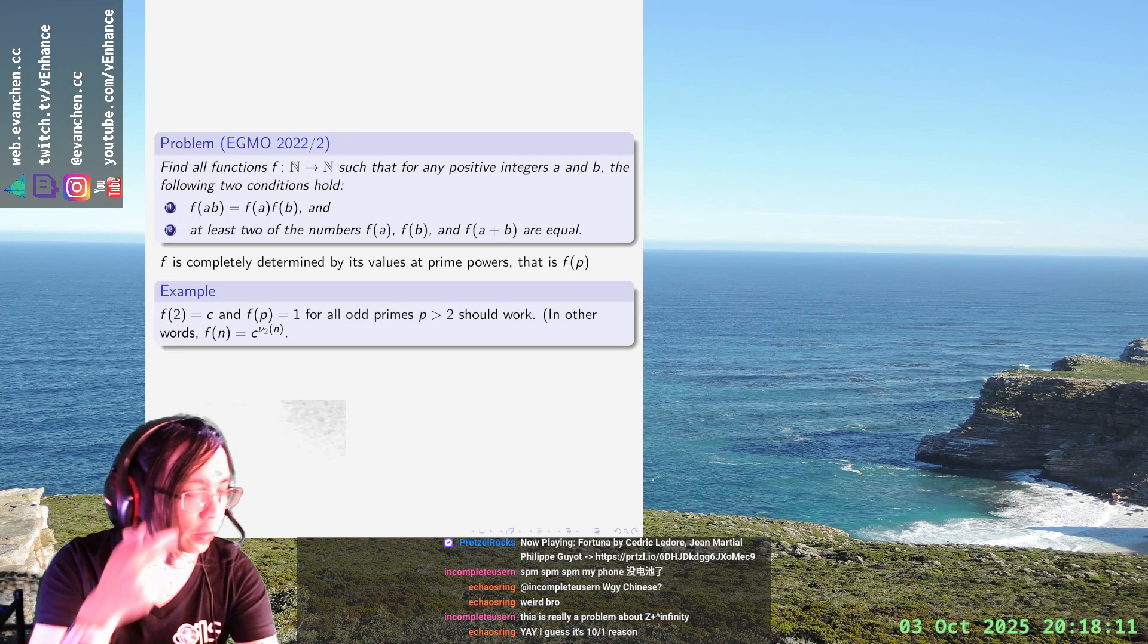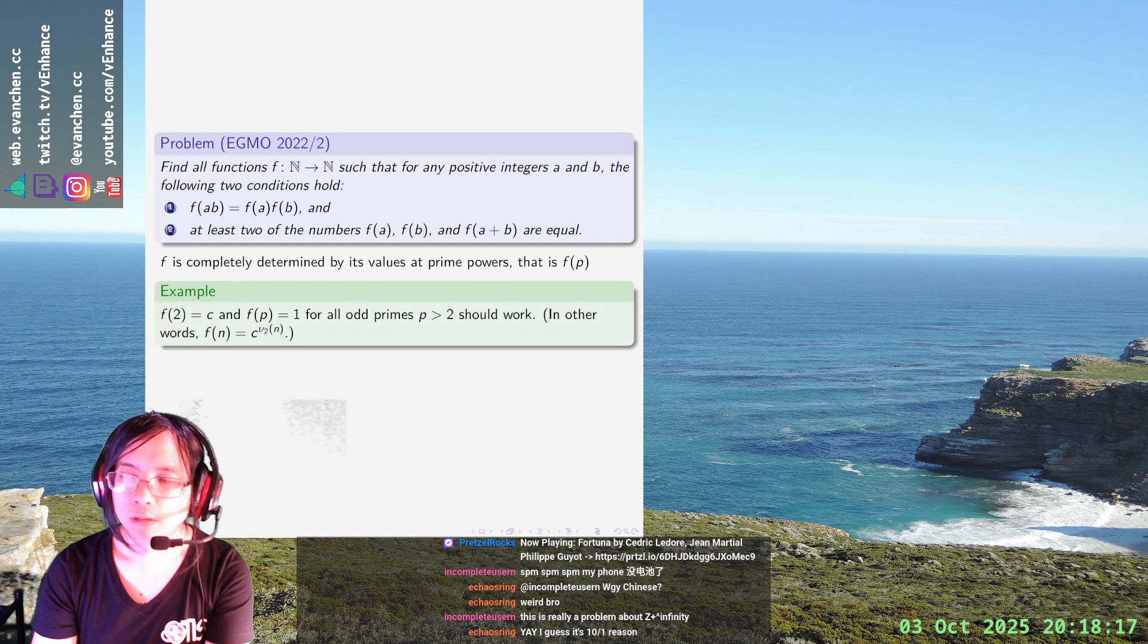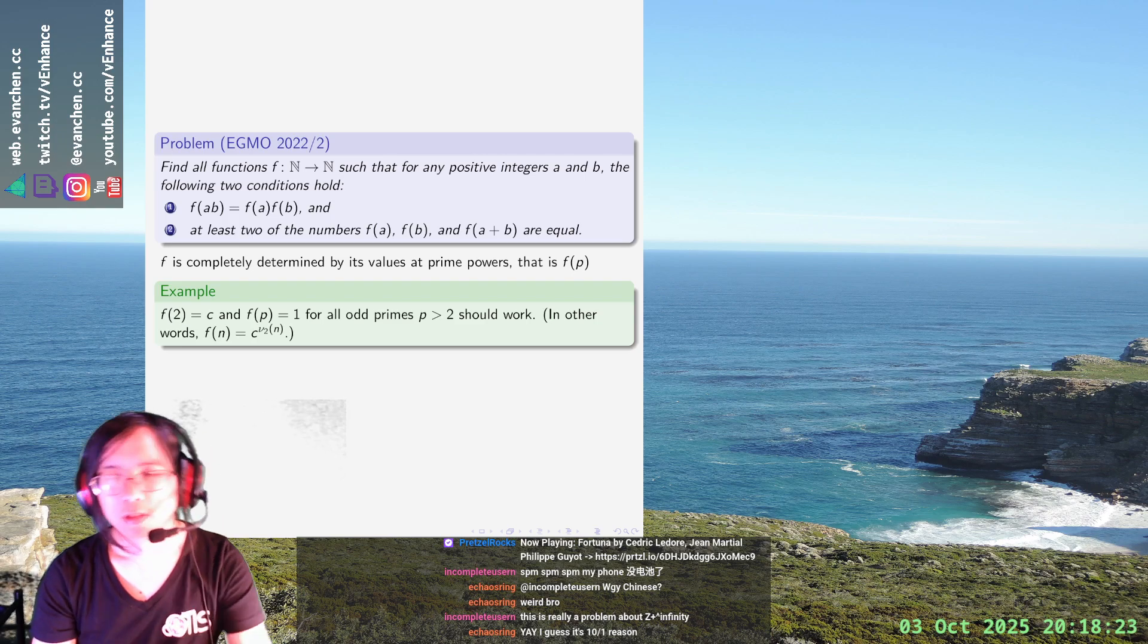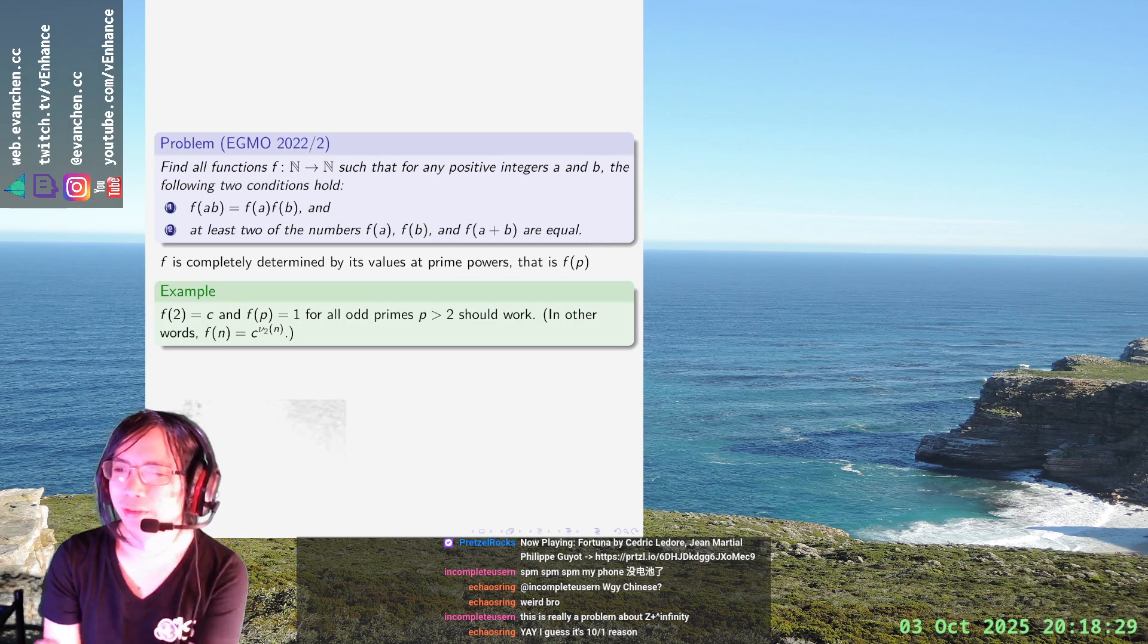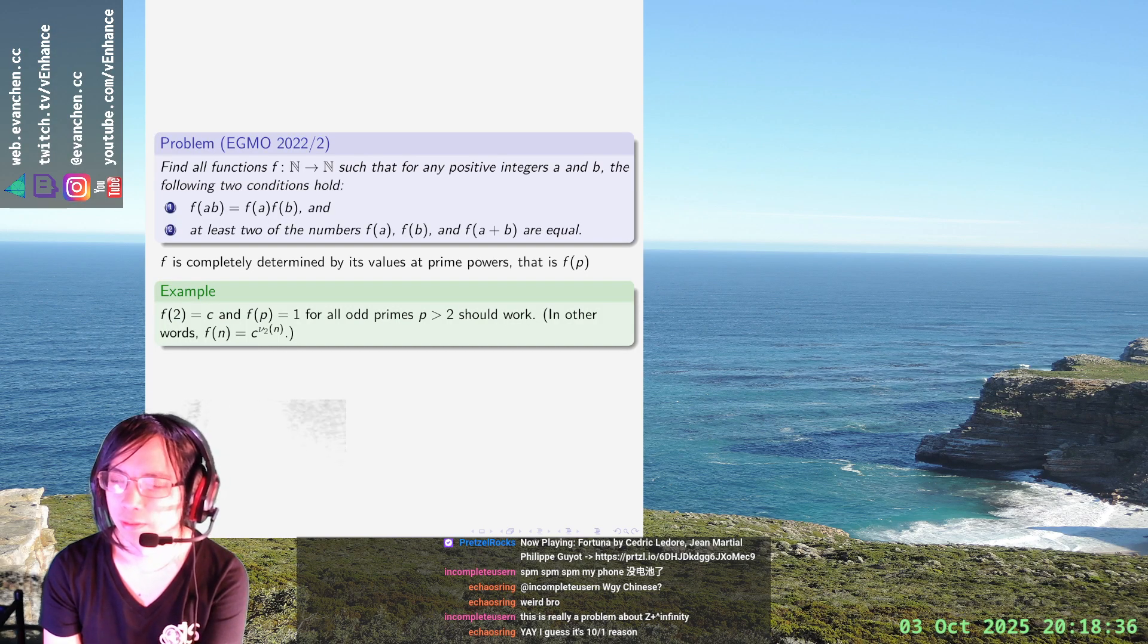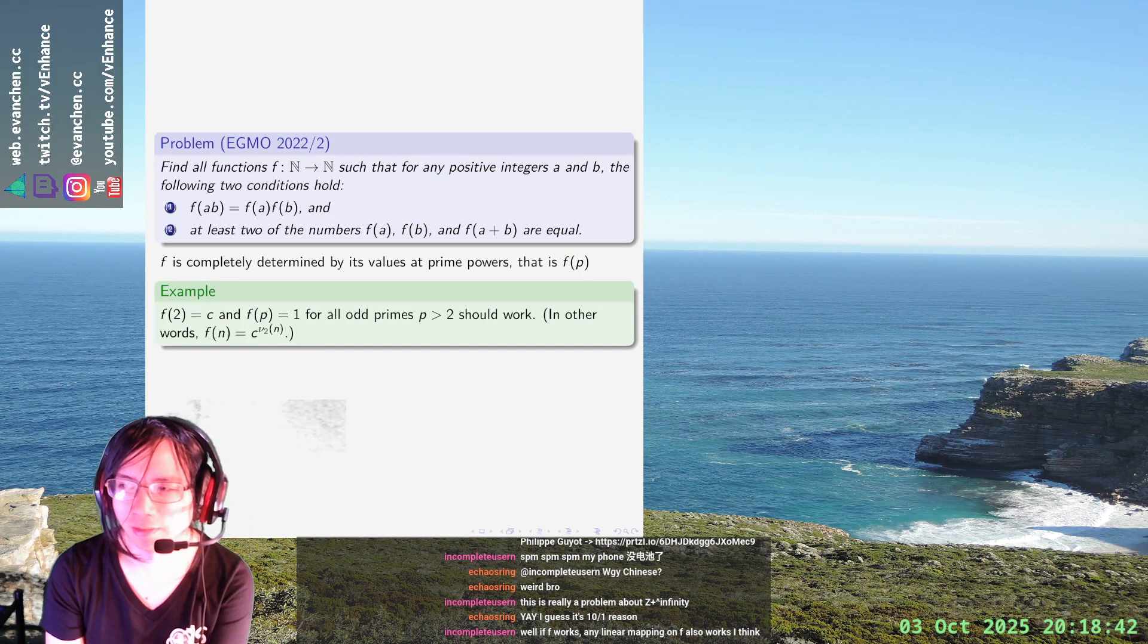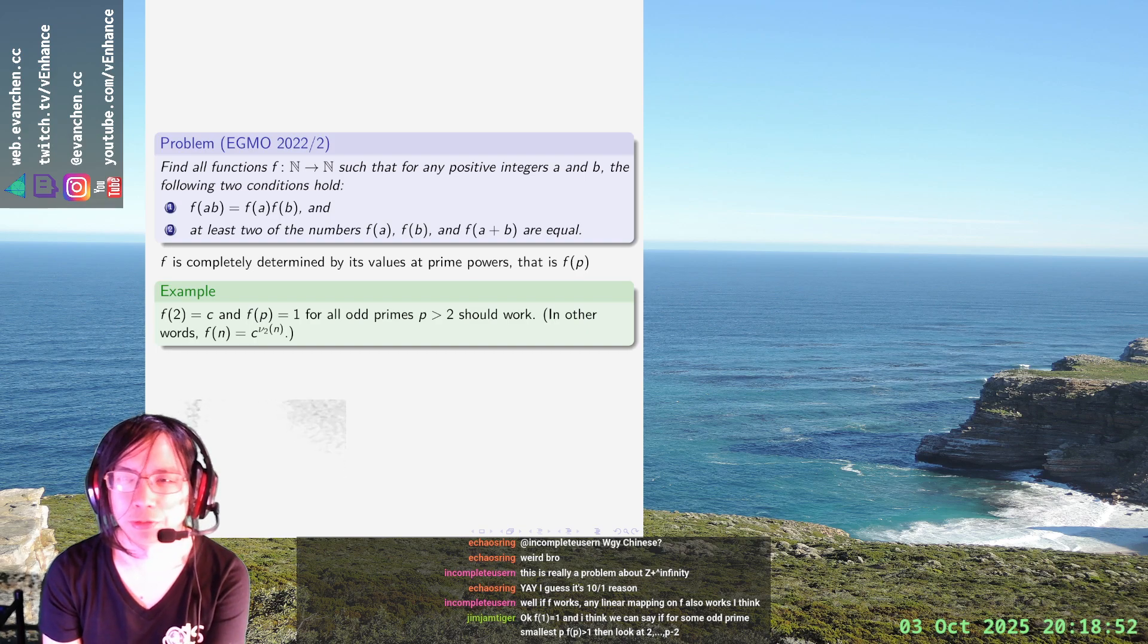If f of 2 is whatever it wants... in general, if I have other primes, addition and multiplication just don't work very well together. Like for example, if I look at f(2), f(3), f(5), or f(2), f(5), f(7)... somehow I want to zero in on the prime 2 because prime 2 looks like it's doing something different from the other primes.